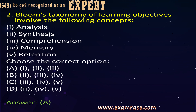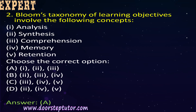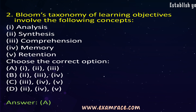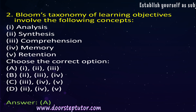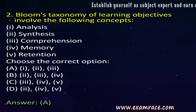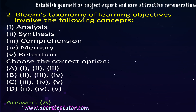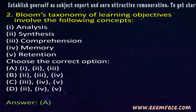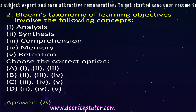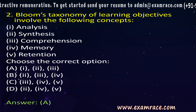The steps of the cognitive domain include: first, knowledge — which can be knowledge of facts or knowledge of theories and principles. After knowledge, one must comprehend or understand that fact. After comprehension, there is application of that knowledge in real life. After application, there is analysis, then synthesis or generation of new theories or facts, and finally the evaluation process. The correct answer is A.